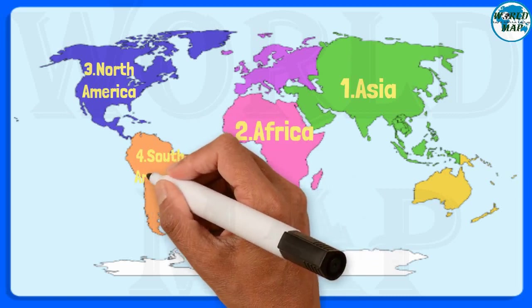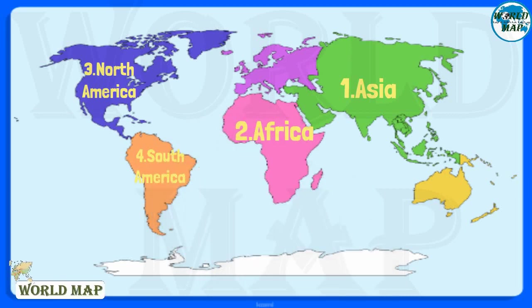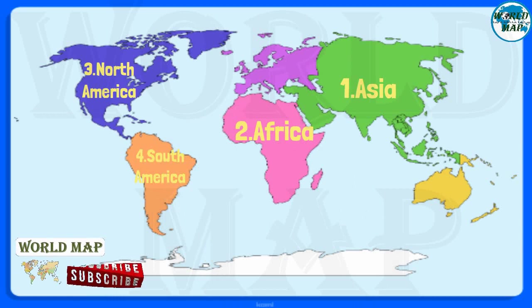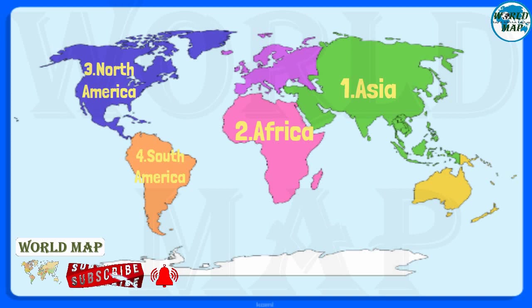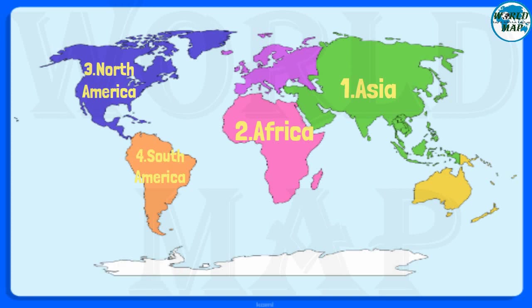Number 4. South America. It is the fourth largest continent area-wise and the fifth most populous in the world. It consists of 12 nations and mostly lies in the Southern Hemisphere, while a small portion of the continent lies in the Western Hemisphere.